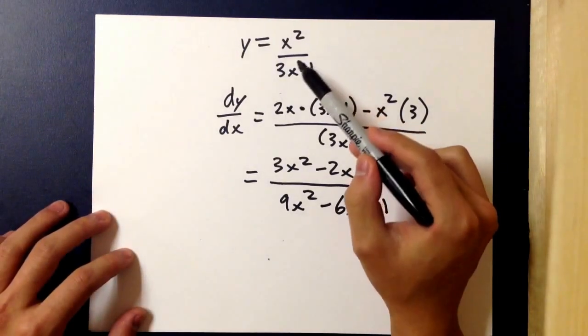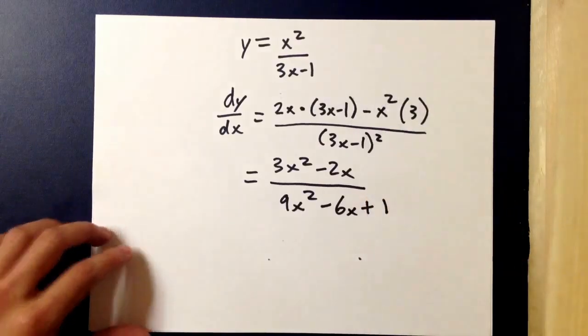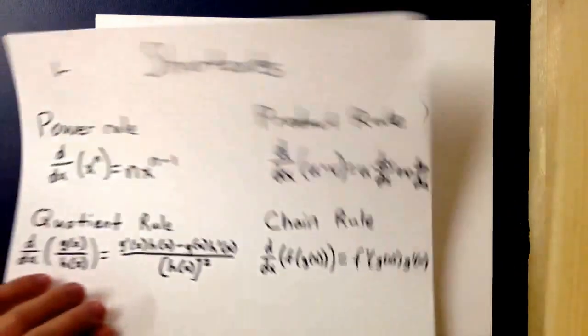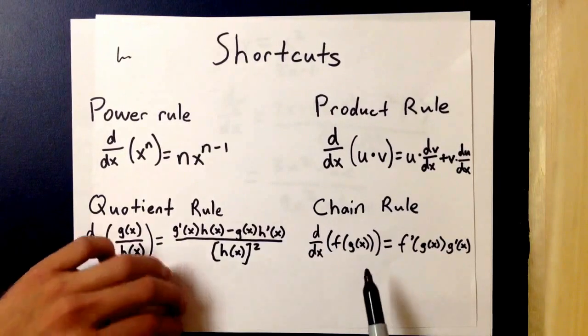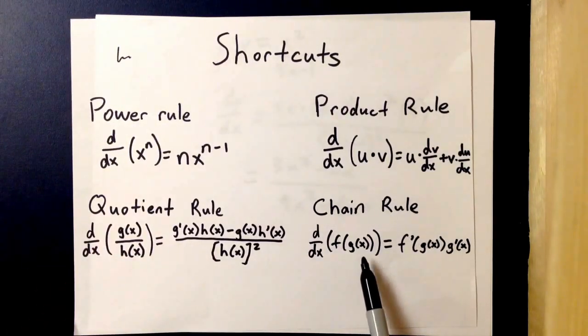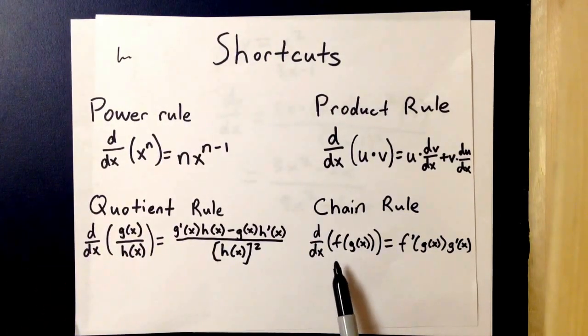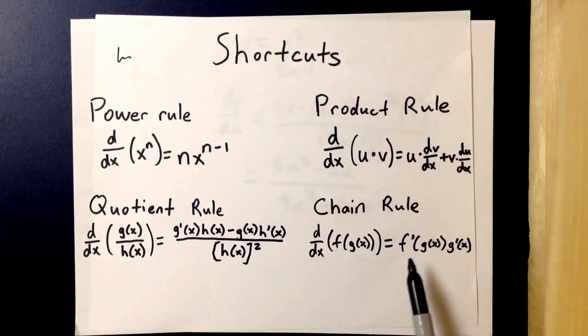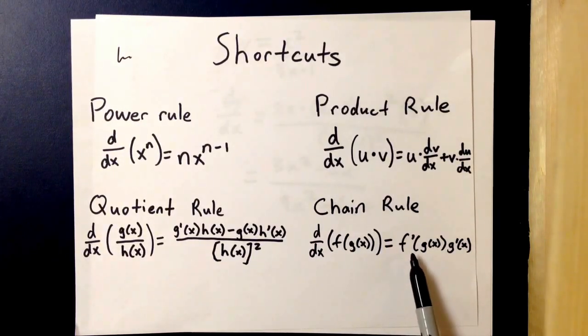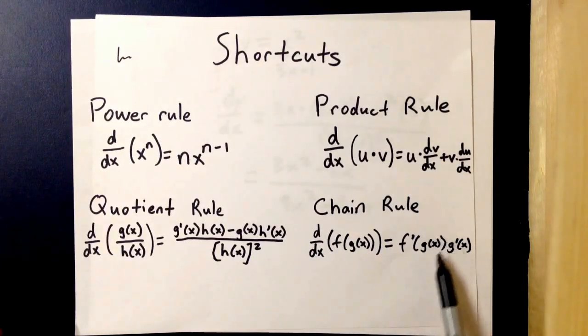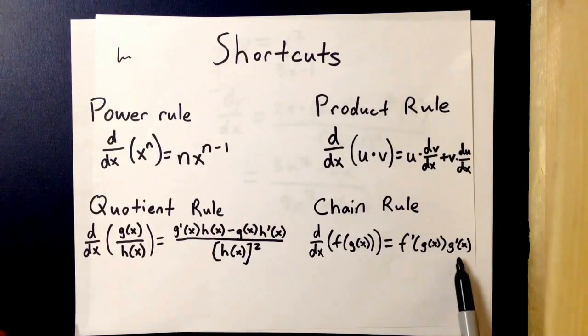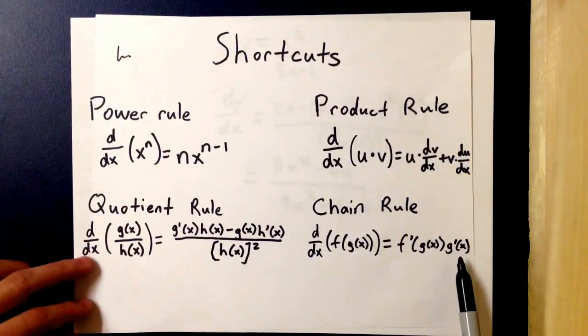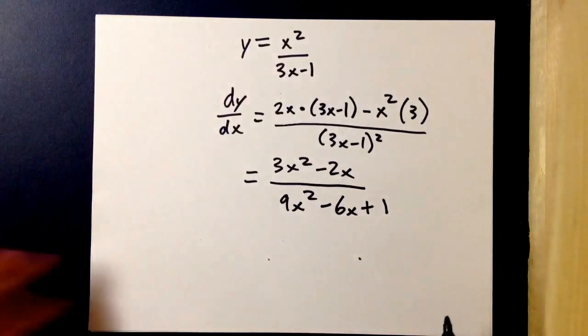Last but not least we have the chain rule, and this is where you find a function embedded within another. The derivative of this would be the derivative of the outer function where the inner part remains the same, and then multiplied by the derivative of the inner.